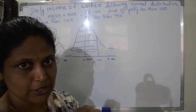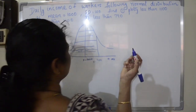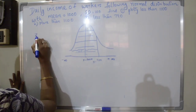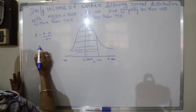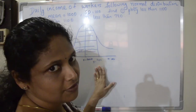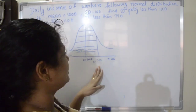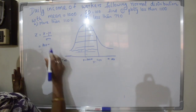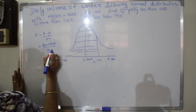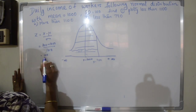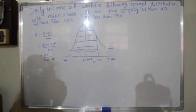This is a normal distribution problem, so we will apply the standard normal distribution formula. Z equals x minus mu divided by sigma. For the condition x less than 1,100: Z equals 1,100 minus 1,000 divided by 100, which gives 100 divided by 100, so Z equals 1.